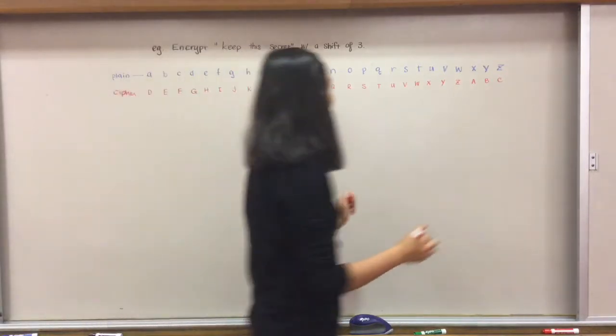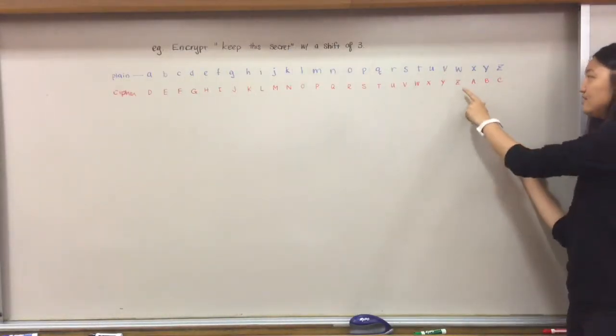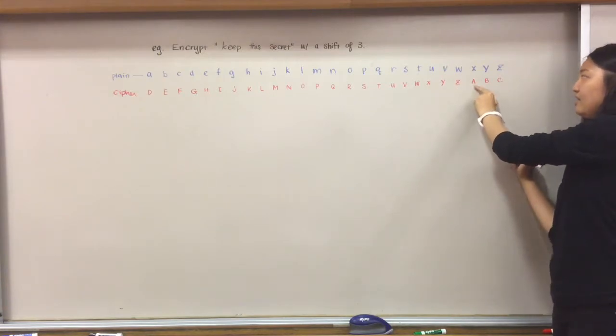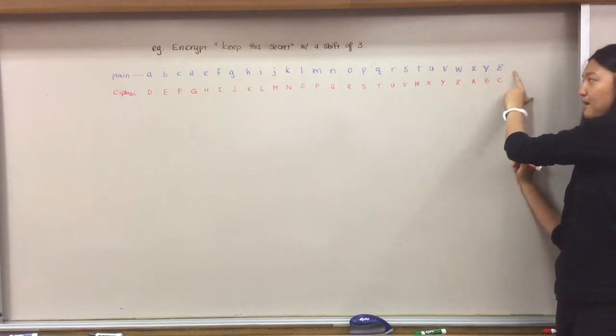One thing to take notice is that once you end at z, when you're mapping w, you start again at a. That maps onto x, and then y maps onto b, and then z maps onto c.